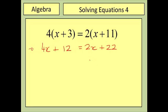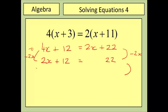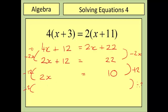This line now looks like the previous questions, so I'm going to do the same thing: subtract 2x from both sides giving 2x plus 12 equals 22, then subtract 12 from both sides giving 2x equals 10, and finally divide by two — giving x equals 5 as the final answer.